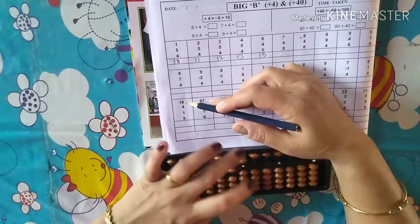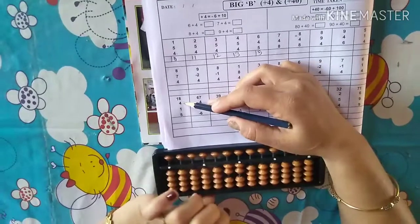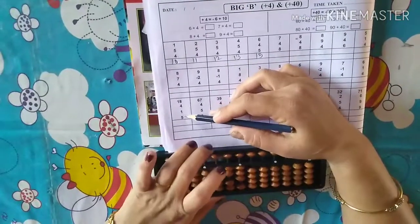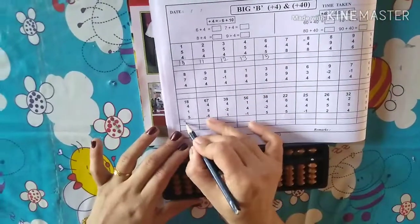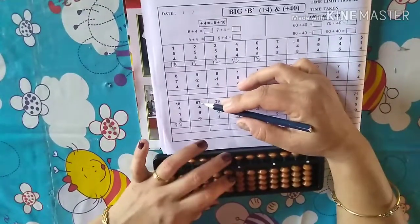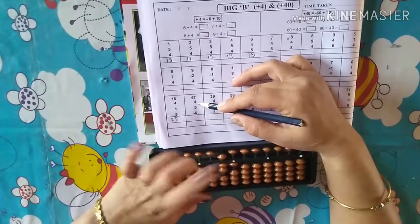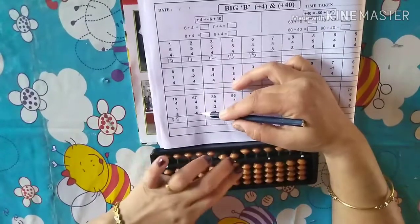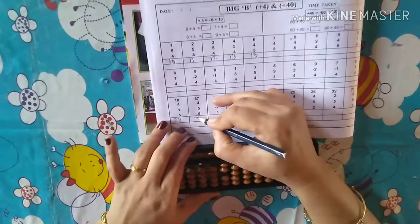18 plus 4. So subtract 6 plus 10, then 4, 1, and 5. Answer is 28. Clear Abacus. 67 plus 4. So subtract 6 plus 10, then 4, 5, and subtract 6. Answer is 70.